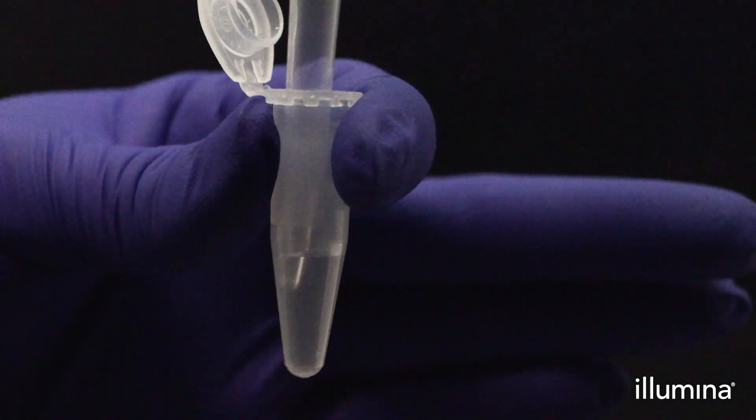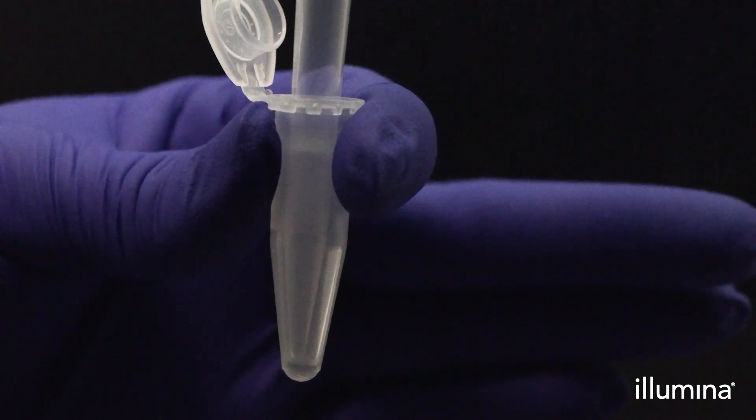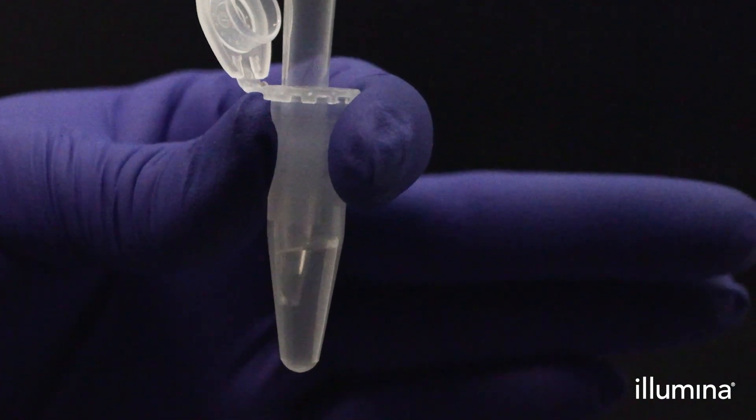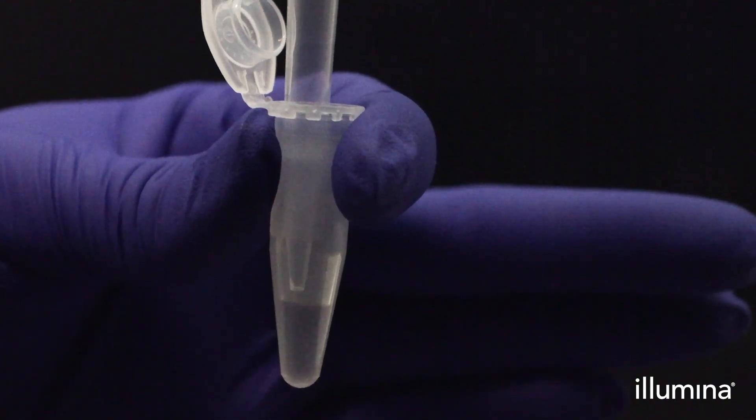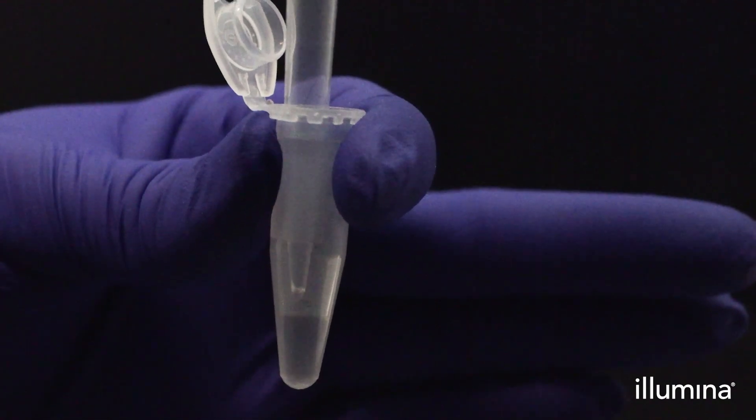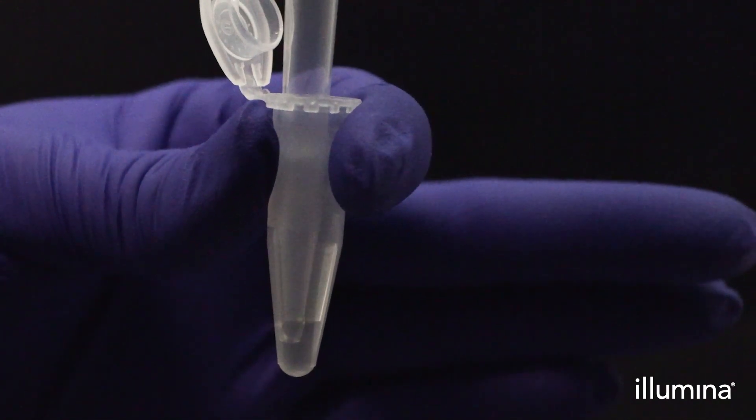First, gently pipette mix your cell or nuclei suspension 10 times with a wide-bore P200 pipette tip. The cell or nuclei suspension should be freshly mixed before transferring into the pips to prevent settling from impacting your sample loading.